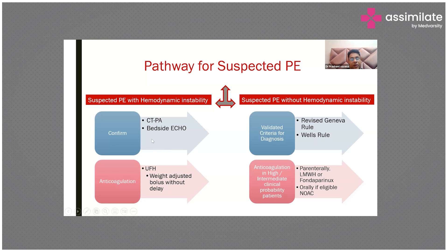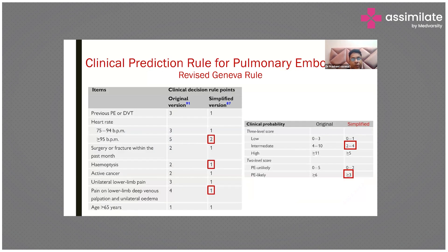If the patient is hemodynamically unstable, confirmation of diagnosis can be done using bedside echocardiography or CTPA, and anticoagulation is started without delay. In patients with hemodynamic compromise, weight-adjusted unfractionated heparin bolus is given without delay. A lot of time can be wasted in evaluation, so it is important to quickly divide the patient into a clinical probability category.